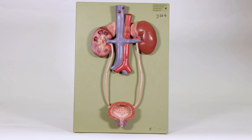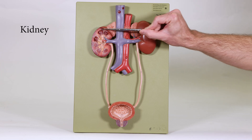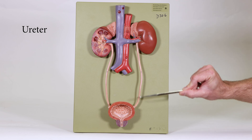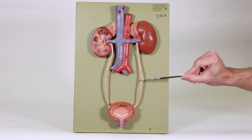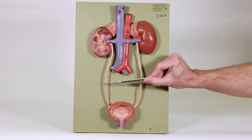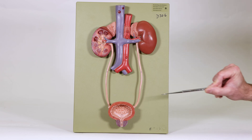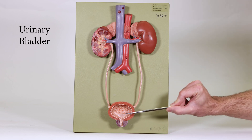This model is showing the urinary system in its entirety. You have the kidneys up top. You have the ureters running down — the right and left ureters. You have the urinary bladder located down here.